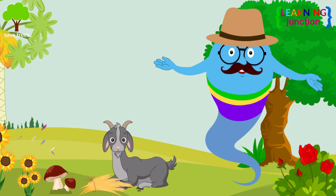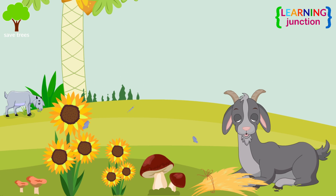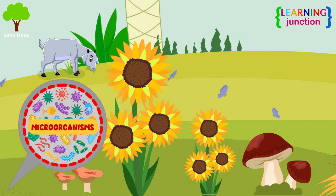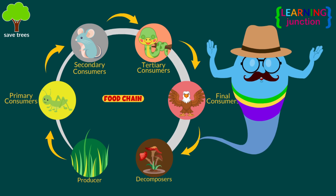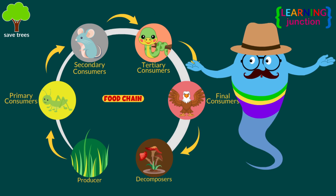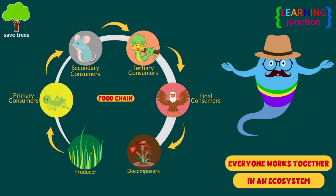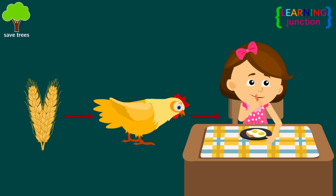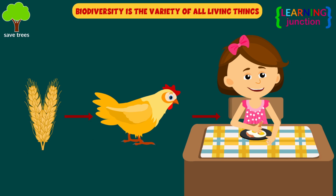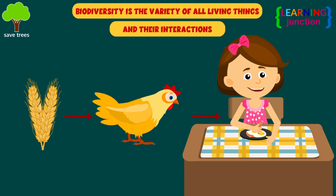In this park, all the different kinds of life are seen. It includes various animals, plants, fungi, and even microorganisms. Look at this food chain. Each species and organism work together in an ecosystem to maintain balance and support life. In simple words, biodiversity is the variety of all living things and their interactions.